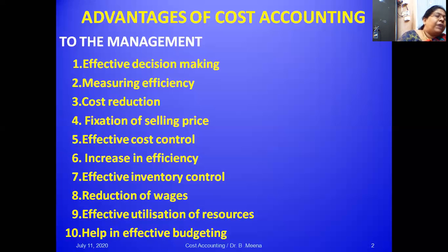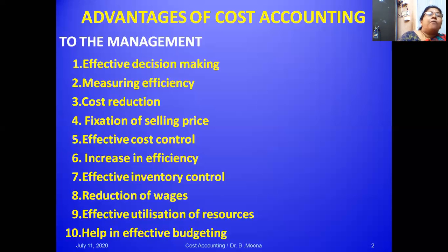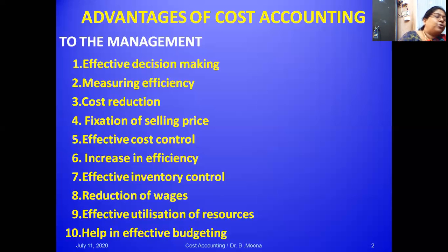The fifth advantage is effective cost control. The fundamental objective of cost accounting is to ascertain and control cost. Simultaneously, it checks whether there is control over cost. The segregation of cost at different stages is very helpful in effective control through standard costing as well as budgetary costing.